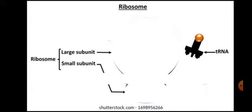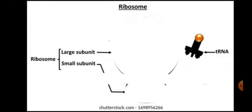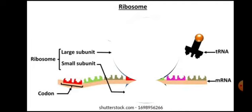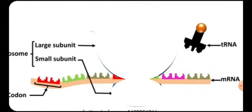All these events happen only in the cytoplasm because in bacterial cells there is an absence of compartmentations. This mRNA then binds to ribosomes — specifically the 70S type of ribosome — in the next step called mRNA binding to ribosomes.